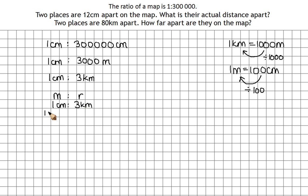We want to know how far 12 centimeters is on the map. Sorry, 12 centimeters on the map, what that is in real life. So we use the idea of proportion. So I know that if 1 centimeter is 3 kilometers, then 12 centimeters is going to be 12 lots of that.